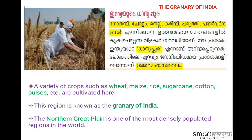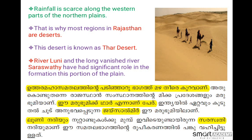Rainfall decreases along the western part of the northern plain. This is why most regions in Rajasthan are desert. This desert is known as the Thar Desert. River Luni and the long-vanished river Saraswati have had a significant role in this portion of the plain.